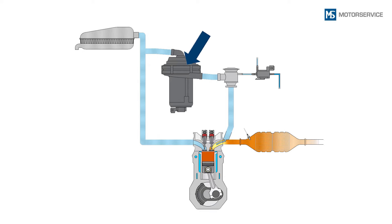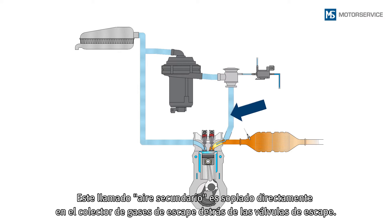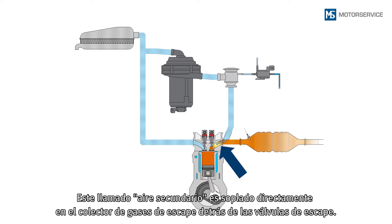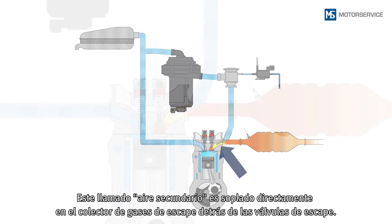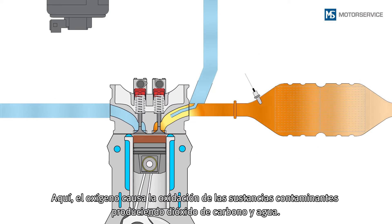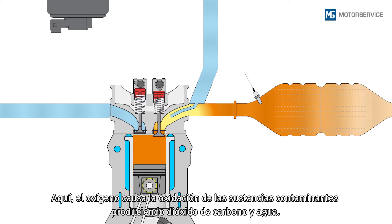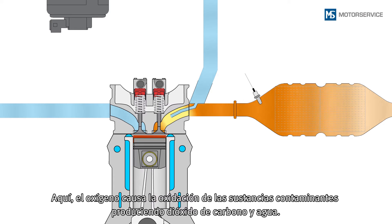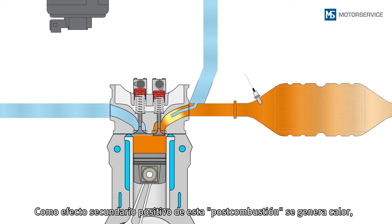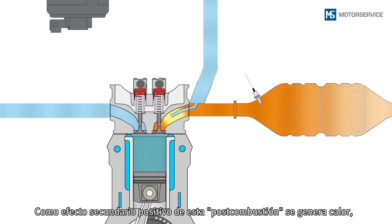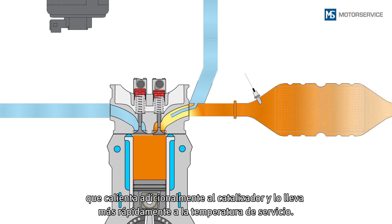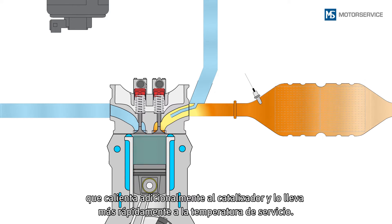This so-called secondary air is blown directly into the exhaust manifold behind the exhaust valves. Here, the oxygen causes oxidation of the pollutants, thereby creating carbon dioxide and water. A positive side effect of this after-burning is heat, which heats up the catalytic converter and brings it up to its operating temperature more quickly.